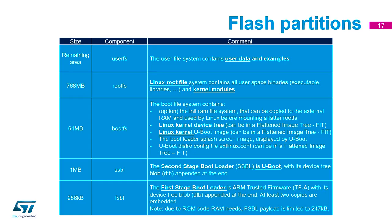Looking at memory mapping: the first stage bootloader must sit in embedded RAM. This is normally TF-A — Arm Trusted Firmware — and TF-A will have its own device tree blob because it needs to know about the DDR to set up the DDR interface. The embedded RAM is 256k, but with other items also needing to sit there, the actual first stage bootloader payload is limited to 247 kilobytes.